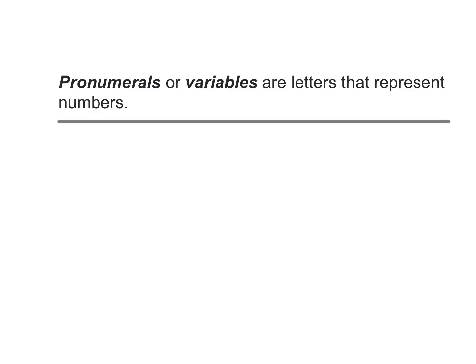The first term we can look at is pronumerals or variables, and these are letters that represent numbers. For example, the letter A, the letter X, the letter B, the letter C, or the letter Q - these are all pronumerals or variables.